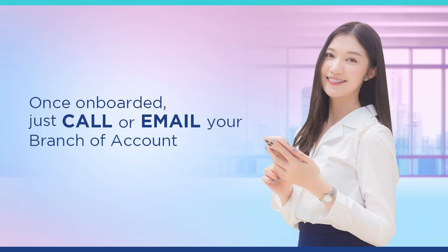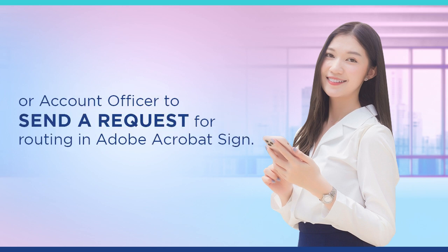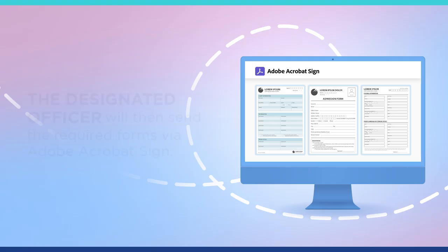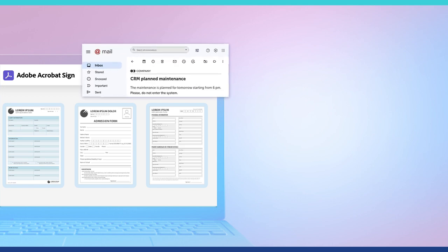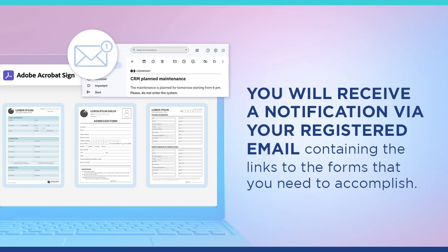Once onboarded, just call or email your branch of account or account officer to send a request for routing in Adobe Sign. The designated officer will then send the required forms, and you will receive a notification via your registered email containing the links to the forms that you need to accomplish.